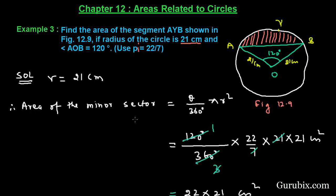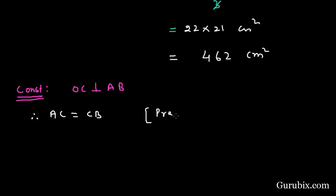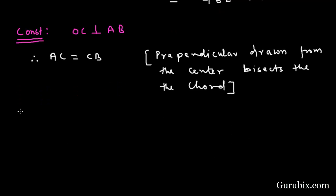Now we shall find the area of triangle AOB. For that, we shall draw a perpendicular from center O to chord AB. Suppose OC is the perpendicular on AB. Therefore AC equals CB, because a perpendicular drawn from the center bisects the chord.